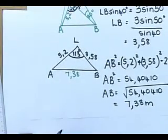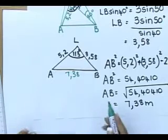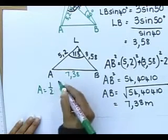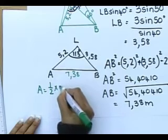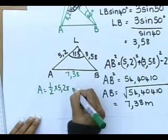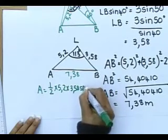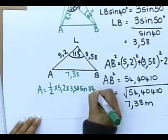Send through your SMSs with what you got for the area. Area will be a half - I know you can find it much quicker than I can. 5.2, 3.58 times the sin of my included angle, 113.